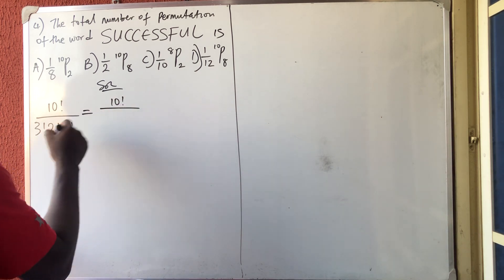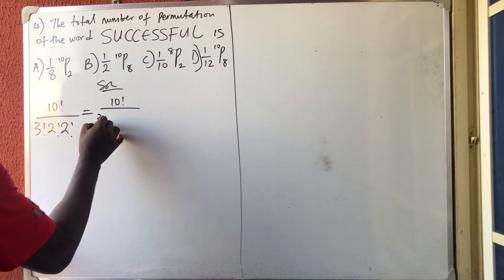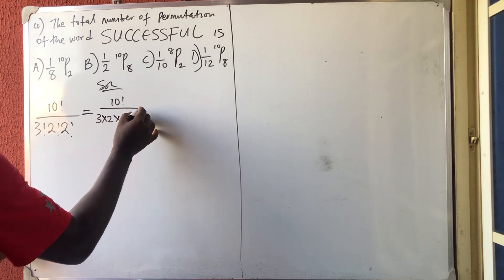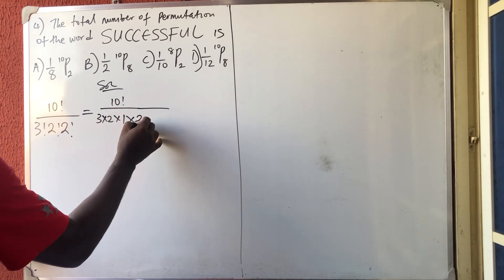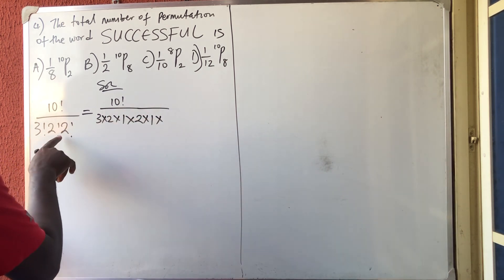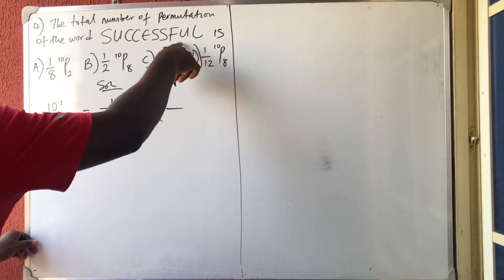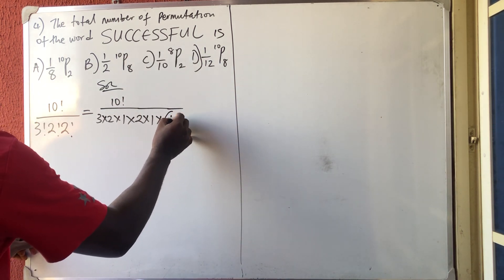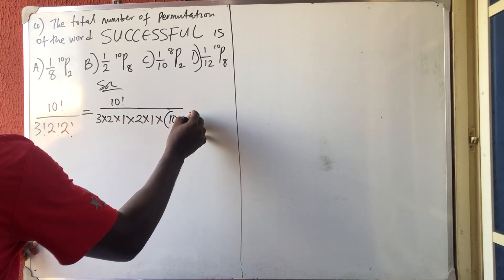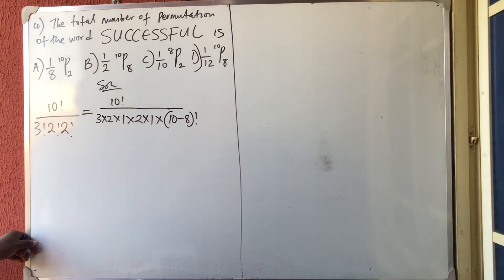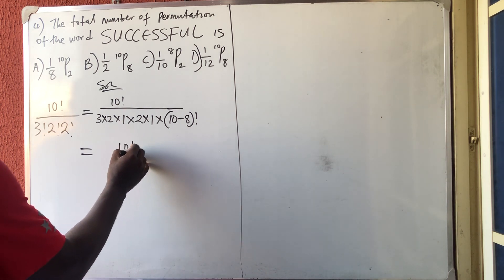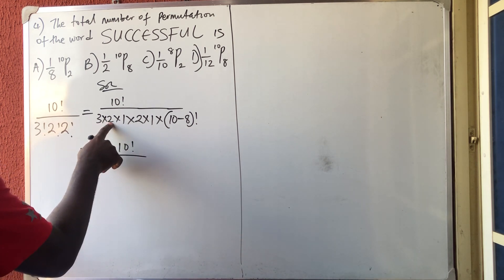Do you believe that this is equal to 10 factorial all over 3 factorial, which is 3 times 2 times 1, times 2 factorial, which is 2 times 1, times these two factors are supposed to be 2 times 1. But I want it to be in permutation form, so can I write it as 10 minus 8? 10 minus 8 will give me back these two factorial, so I'm correct.